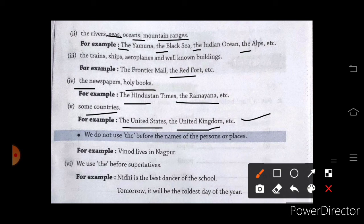We do not use the before the names of persons or places. Kisi name ya, kisi person ka name ya, kisi place ka, jagah ka name ho, toh hum wahan the ka use nahi karte hain. For example, Vinod lives in Nagpur.